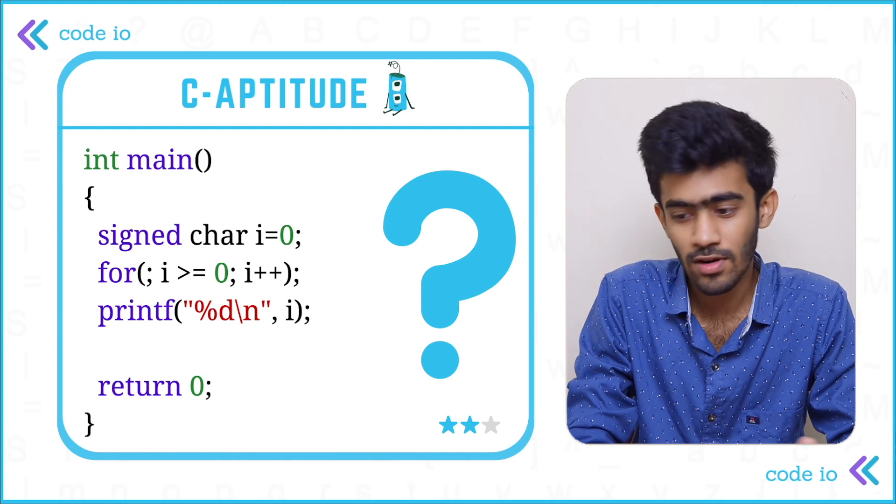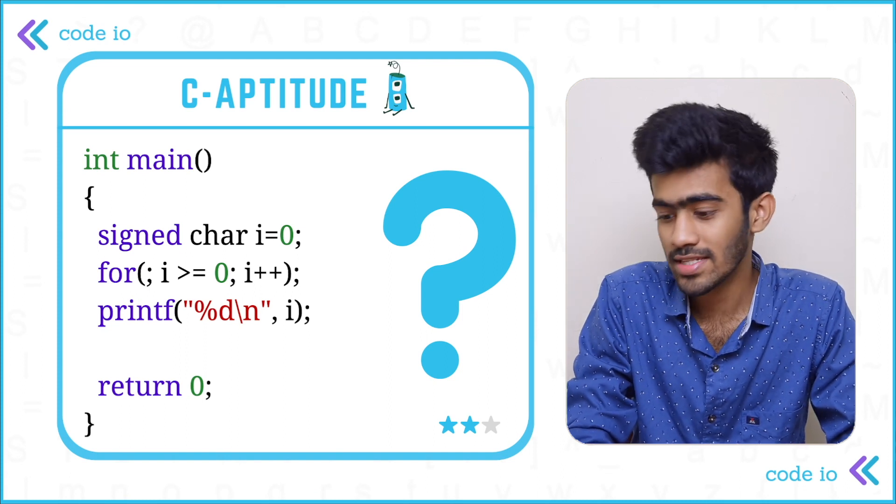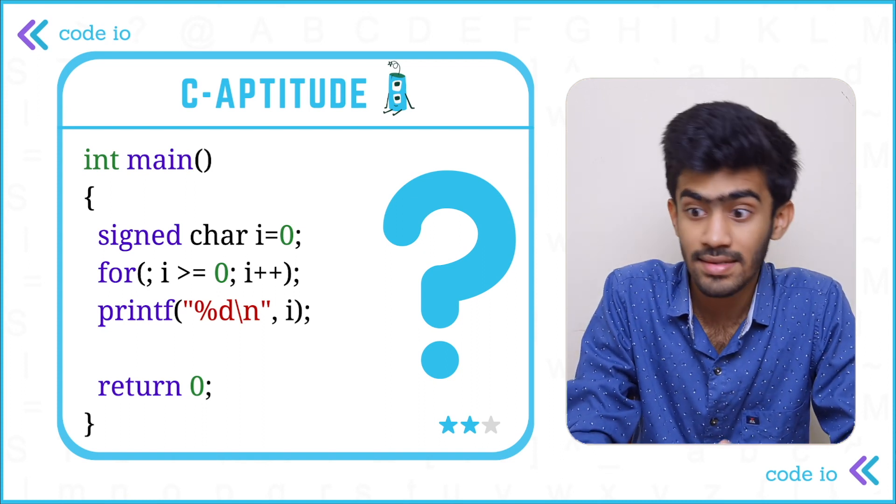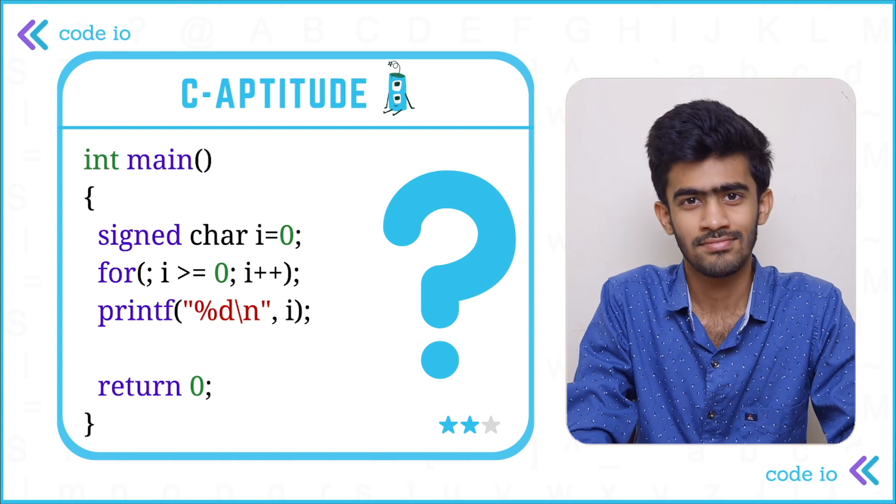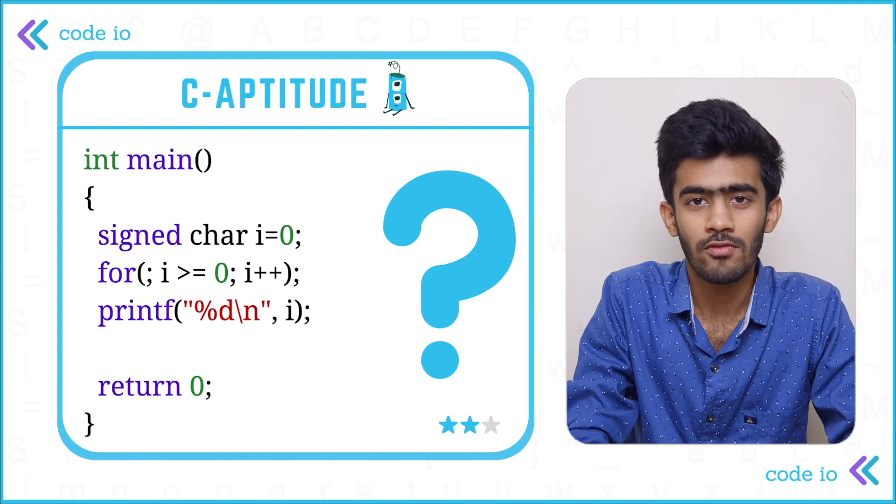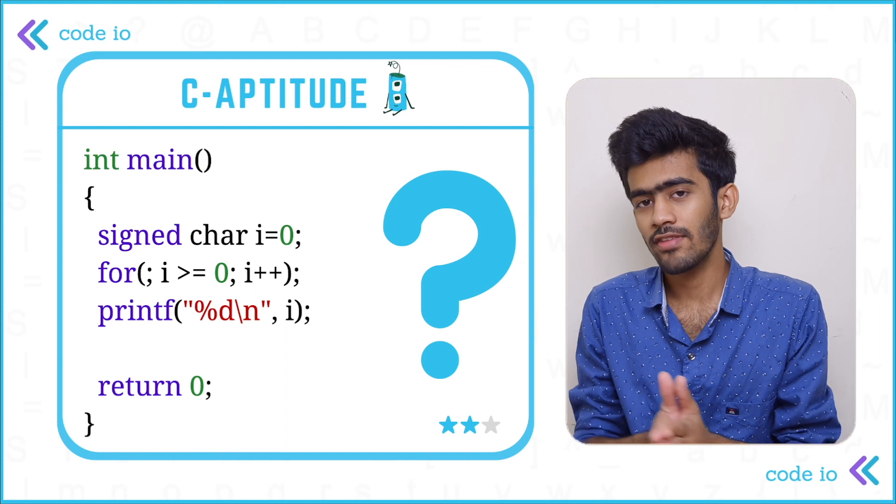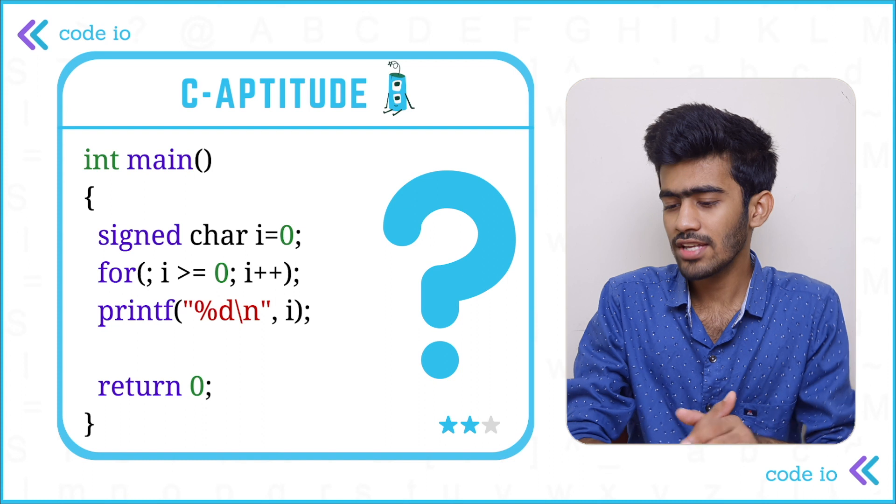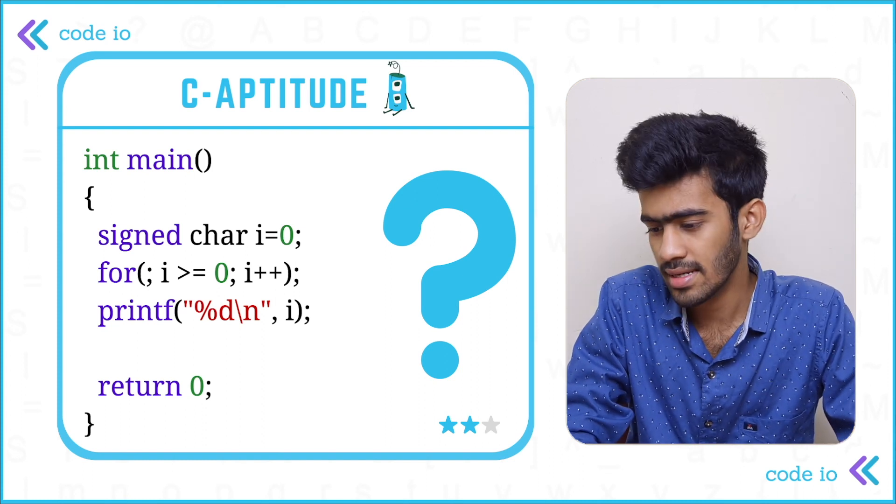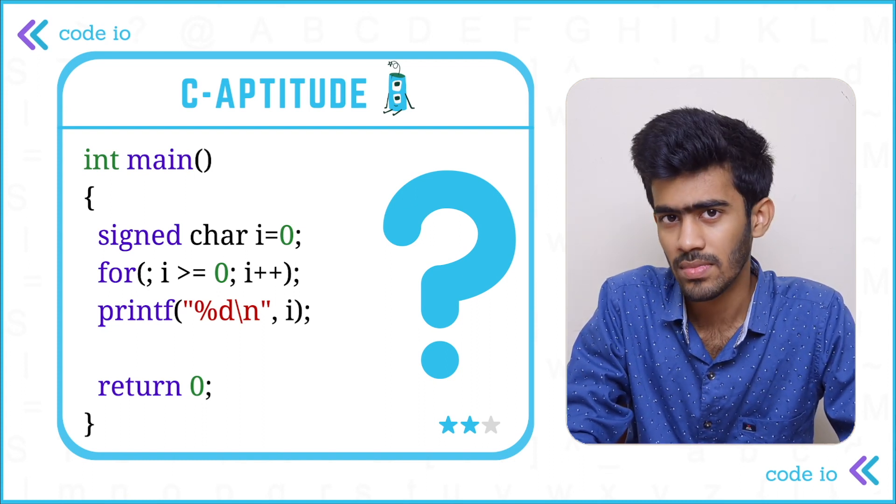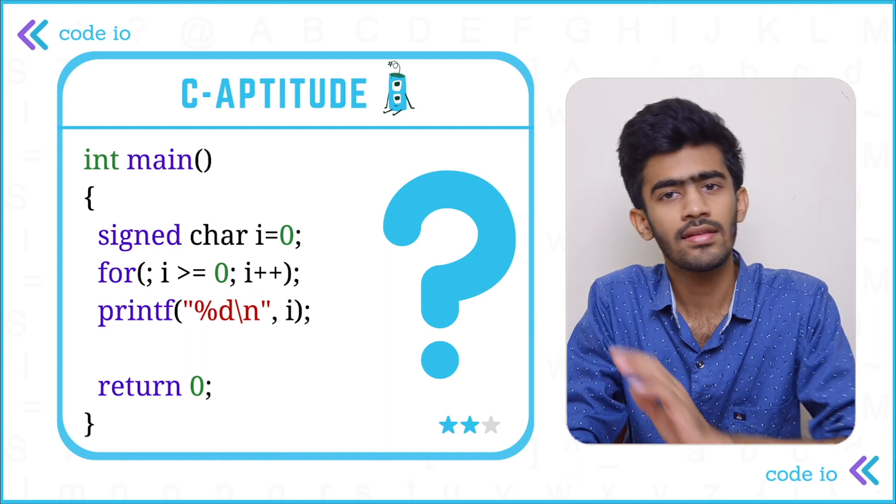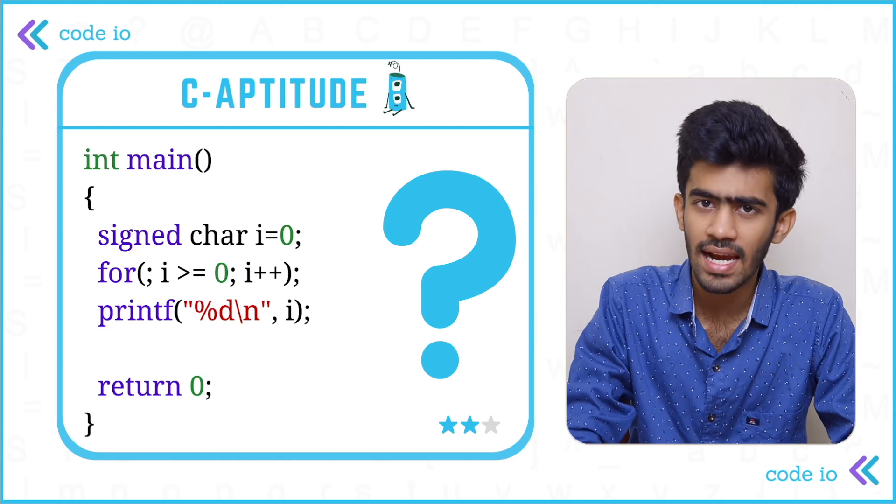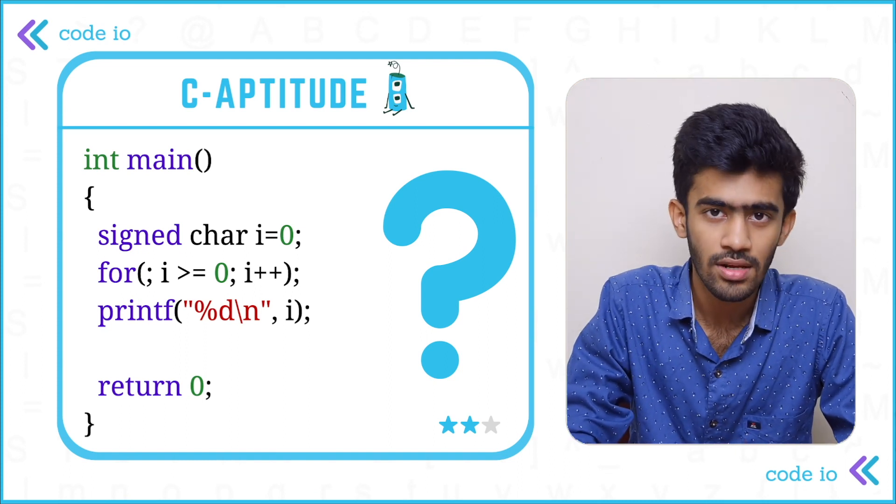So when it goes false, it will come to the next statement which is printf. So what do we have in the printf? printf percentage d backslash n and i. Seems simple. What do we do? So we have the value of i to be 0. We increment it by 1 in each iteration. As you can see here, i is greater than or equal to 0 is the true statement and hence we'll be incrementing the value of i. So till when would we be incrementing this value of i? What is the range of this signed character value? That is what we need to find.